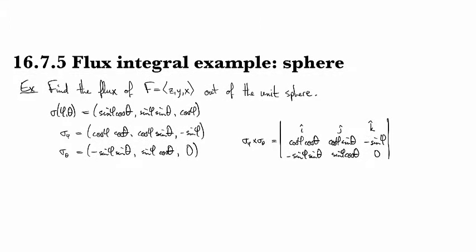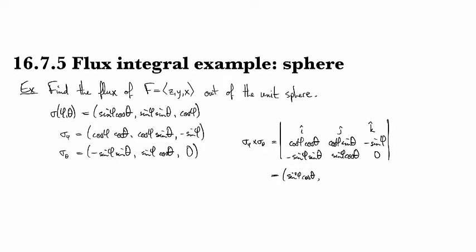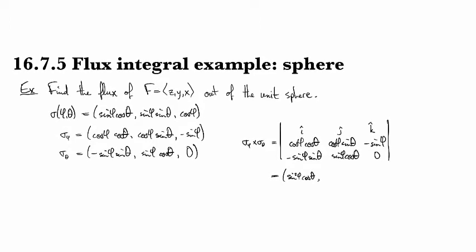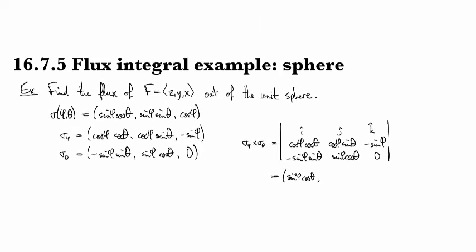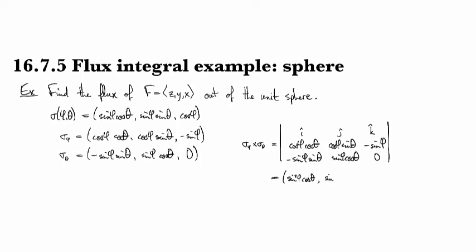So that's going to give us, let's see, in the first coordinate, we're going to have sine squared φ cosine θ. And the second coordinate, we're going to get, let's see, the negative, oh, but then it's the J spot, so positive, sine squared φ sine θ.